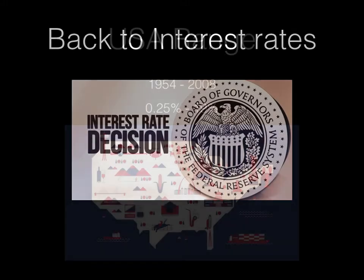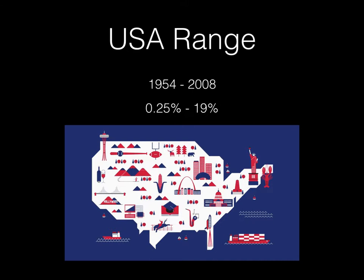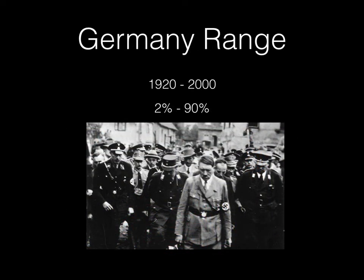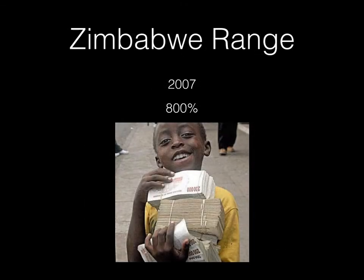Some fun facts about interest rates: in America from 1954 to 2008, rates ranged from 0.25% all the way up to 19%. In the UK from 1989 to 2009, it was anything from 0.5% to 15%. The range can broaden quite widely — in Germany from 1920 to 2000, interest rates ran between 2% and 90%, conditions which actually gave Hitler the economic environment for his party to rise to power. In Zimbabwe in 2007, there were interest rates of 800%, which is how ridiculous it became.